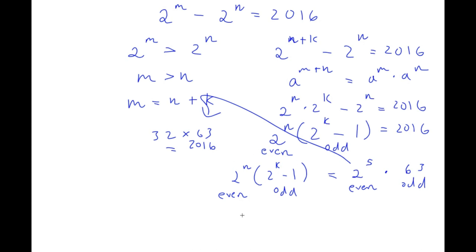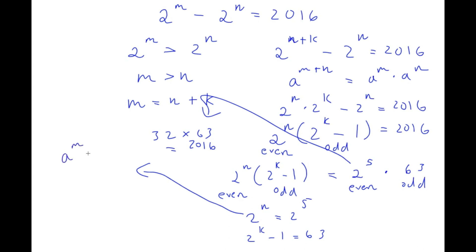This gives us two equations: 2^n equals 2^5, and 2^k minus 1 equals 63. Setting the even parts equal and the odd parts equal respectively. For 2^n equals 2^5, since the bases are the same, n equals 5.